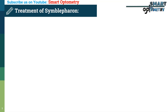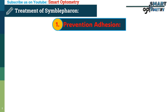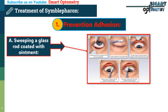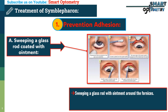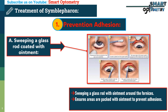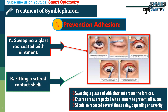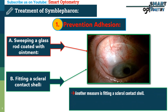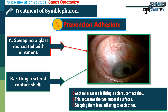What is the treatment of Symbolpheron? 1. Prevention of adhesions — this can be done in two ways. a. Sweeping a glass rod coated with ointment around the upper and lower fornices. This ensures the areas are packed with ointment to prevent adhesions. The procedure should be repeated several times a day depending on the severity of the condition. b. Fitting a scleral contact shell: this separates the two mucosal surfaces, stopping them from adhering to each other.